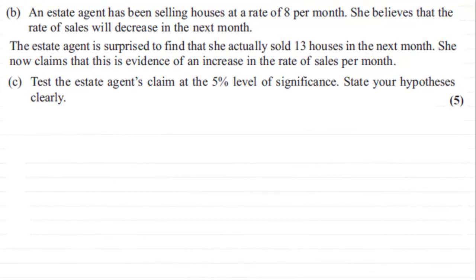Hi, now what we've got here is an example on hypothesis testing and there's often two ways that we can do hypothesis testing. I'm going to show you one method which is the critical value method. What we've got here is an estate agent has been selling houses at a rate of eight per month and she believes that the rate of sales will decrease in the next month.